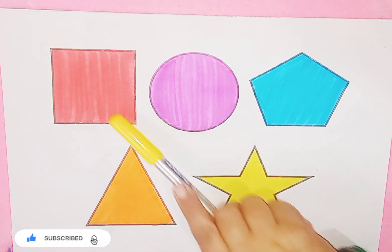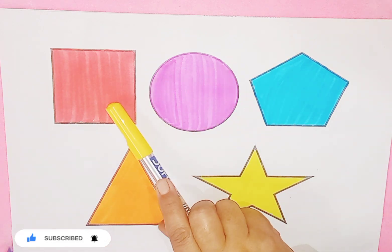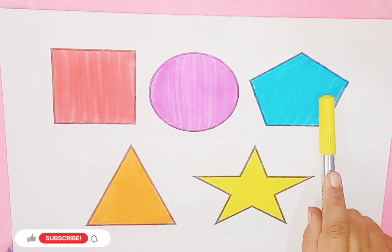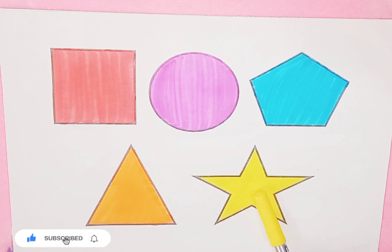So kids, today we learn some 2D shapes. Square with red color, Circle with pink color, Pentagon with sky blue color, Triangle with orange color, Star with yellow color.